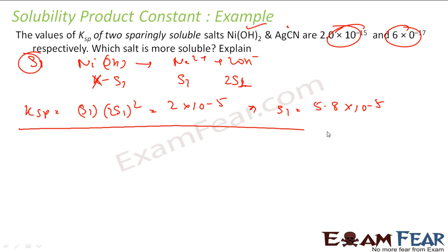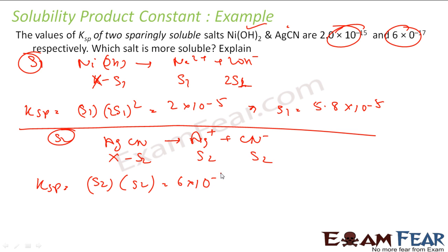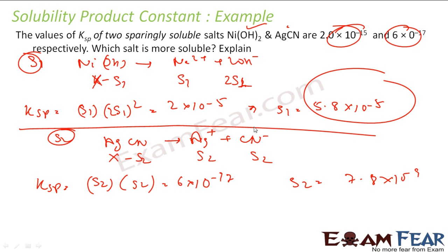For AgCN dissociating into Ag⁺ and CN⁻, let solubility be S₂. At equilibrium [Ag⁺] = S₂ and [CN⁻] = S₂. So Ksp = S₂². Given Ksp = 6 × 10⁻¹⁷, solving gives S₂ = 7.8 × 10⁻⁹. Since S₁ > S₂, Ni(OH)₂ is more soluble than AgCN.